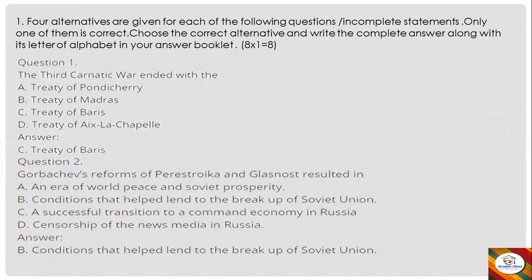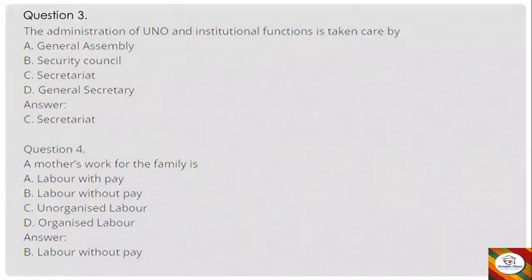Question 2: Gorbachev's reforms of Perestroika and Glasnost resulted in — A) an era of world peace and Soviet prosperity, B) conditions that helped lead to the breakup of the Soviet Union, C) a successful transition to a command economy in Russia, or D) censorship of the news media in Russia. The answer is option B: conditions that helped lead to the breakup of the Soviet Union.